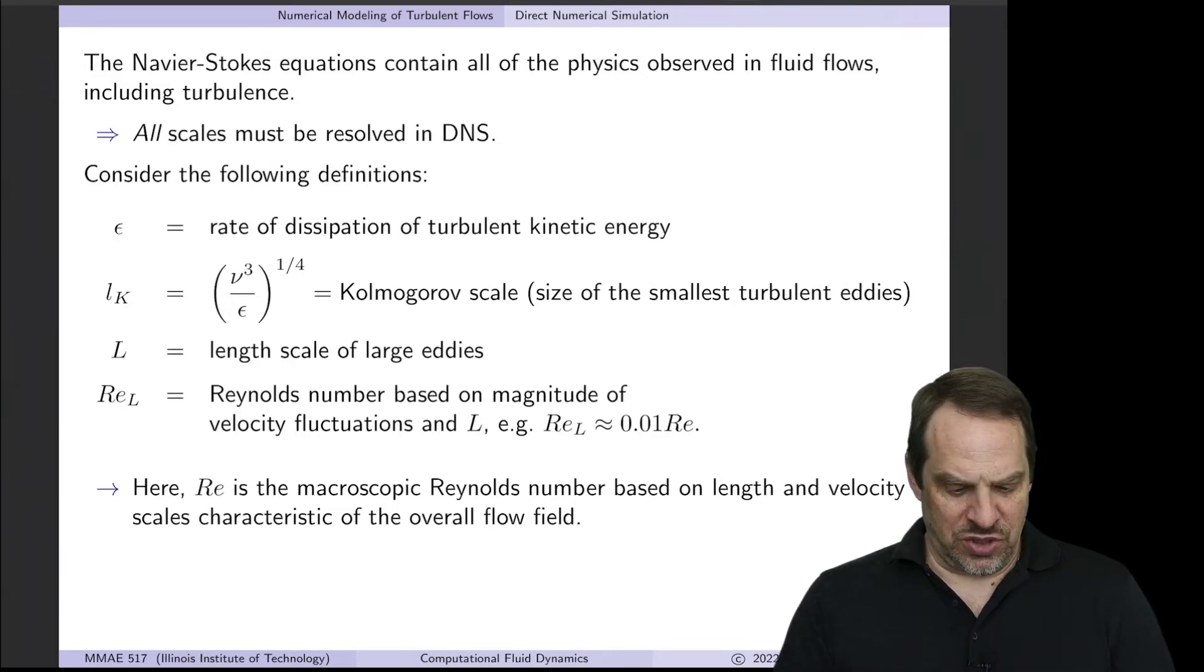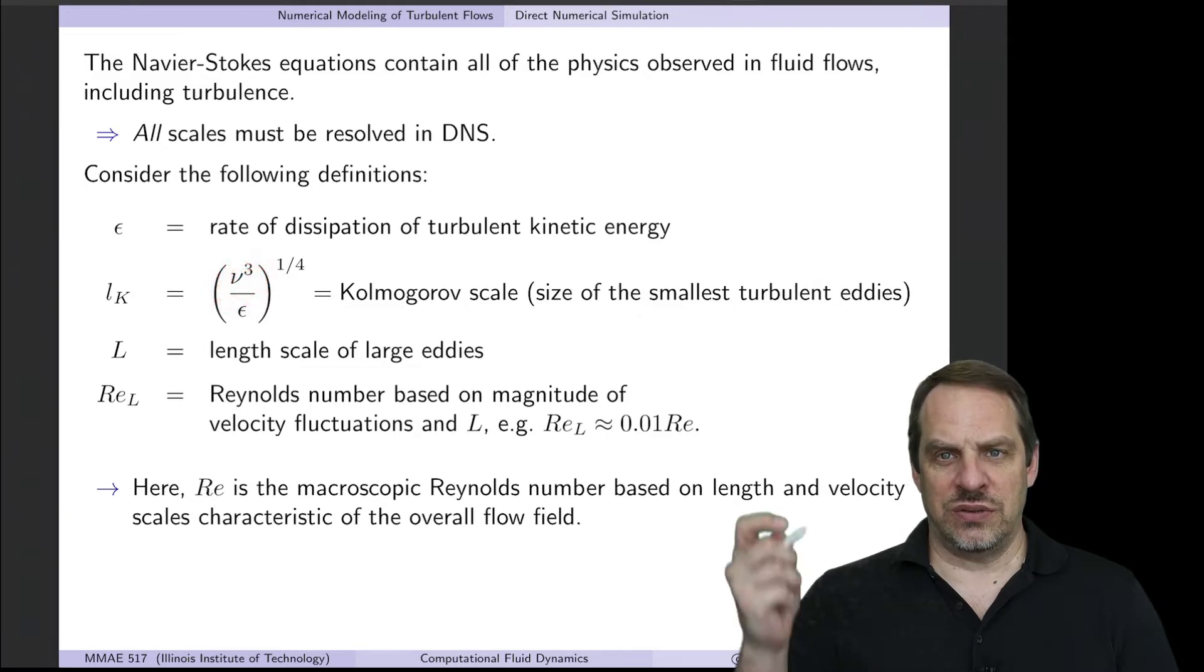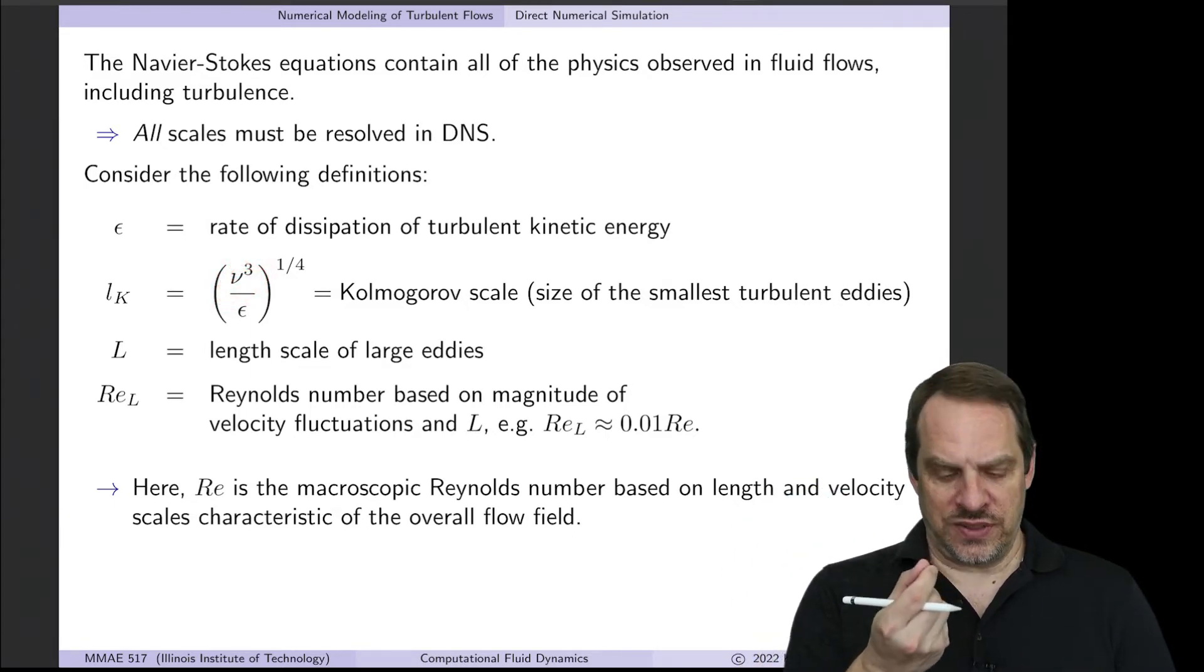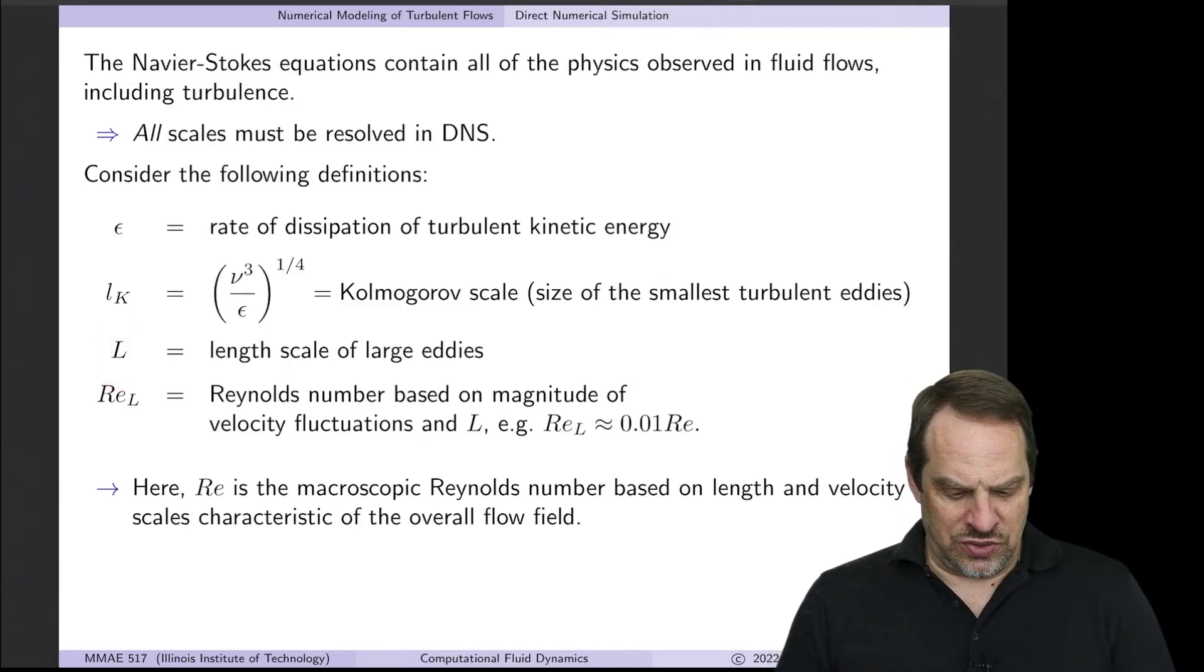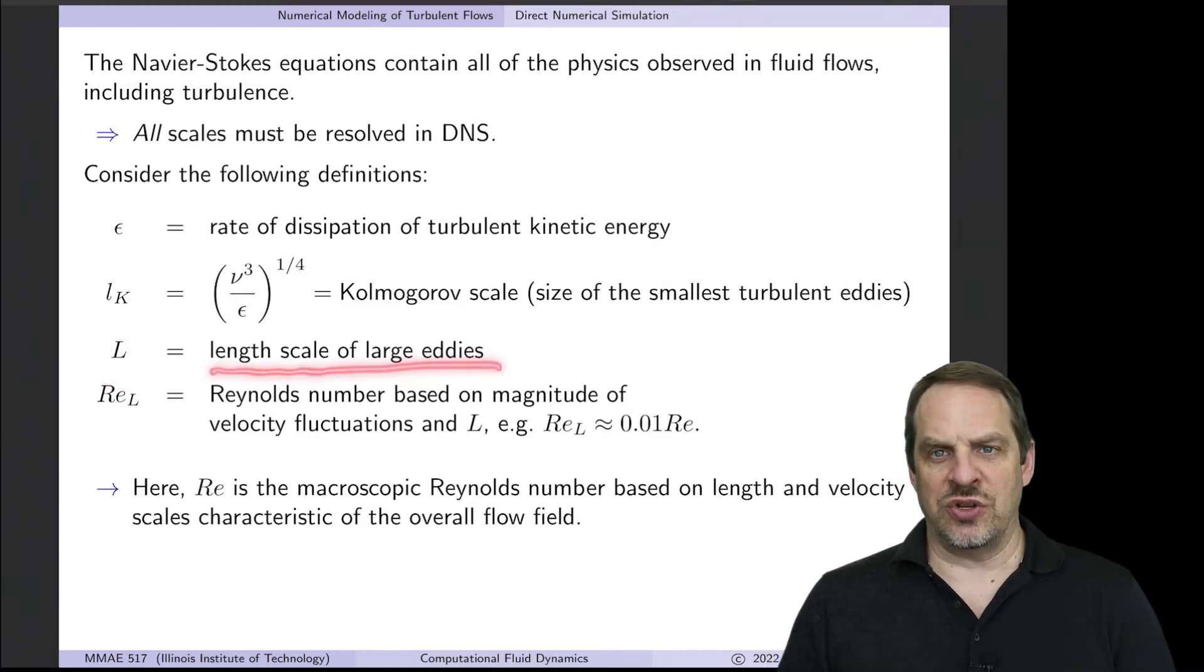So as the viscosity goes down, the Kolmogorov scale goes down, and we have to have smaller and smaller grid sizes. And then we'll use capital L to denote the length scales of the large eddies. So that's comparable to the overall domain of the system.